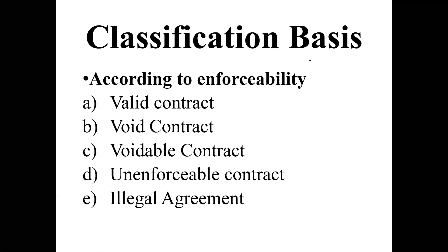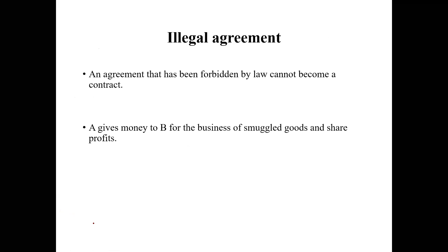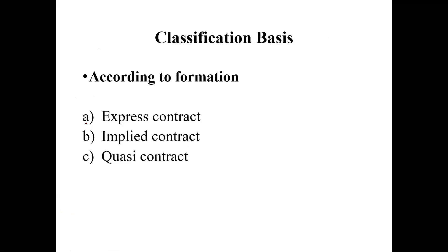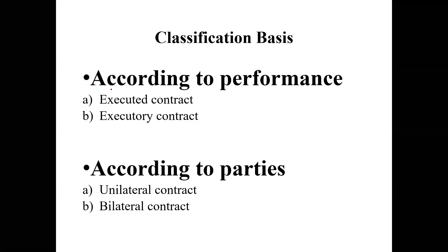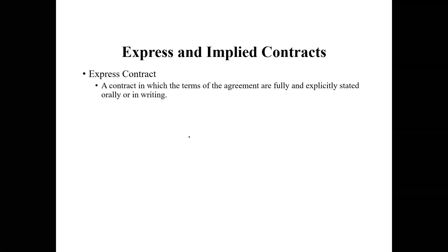The main classification is according to enforceability — that is the first main head. Then under this classification we have five types. Then we have another main classification which is according to formation, with three parts. And then there are heads for according to performance and according to number of parties involved.